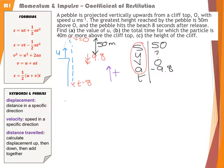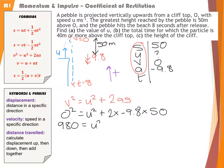Writing it out: V² = U² + 2AS. Substituting in the values: 0² = U² + 2 × (-9.8) × 50. Rearranging: 980 = U². Square rooting gives U = 31.3 metres per second.